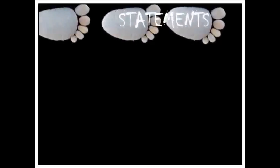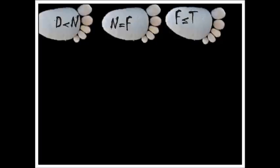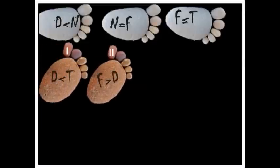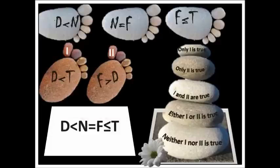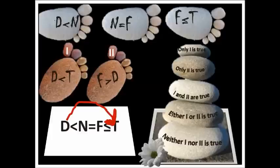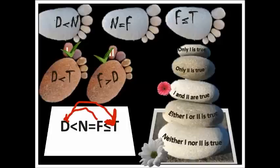Another set of statements: d less than n, n equal to f, f less than or equal to t. Conclusions: d less than t, and f greater than d. Combined statement: d less than n equal to f less than or equal to t. Conclusion one — draw from d to t (forward): highest priority is less than, so d less than t is correct. Conclusion two — draw from f to d (reverse): highest priority is less than, reversed gives f greater than d. Both conclusions are correct — answer: both one and two are true.